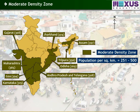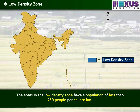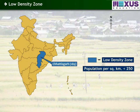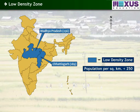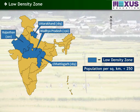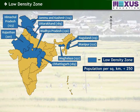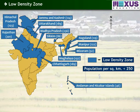The areas in the low density zone have a population of less than 250 people per square kilometer. The states falling under the low density zone are Chhattisgarh, Madhya Pradesh, Uttarakhand, Rajasthan, Himachal Pradesh, Manipur, Meghalaya, Jammu and Kashmir, Nagaland, Sikkim, Mizoram, Andaman and Nicobar Islands, and Arunachal Pradesh.